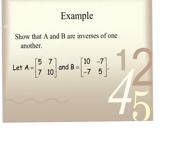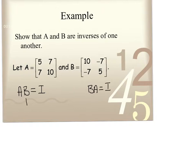What we're going to do is show that these guys are inverses of each other. In order to do that, the expectation is if I multiply A times B, and if B is an inverse of A, it'll equal the identity matrix. The other way is B times A is equal to the identity matrix. So this tells me that A inverse is equal to B, and this tells me that B inverse is equal to A.